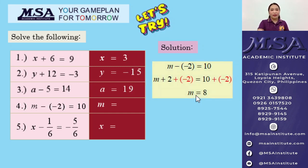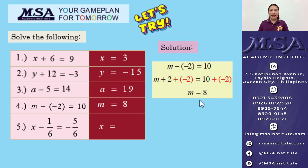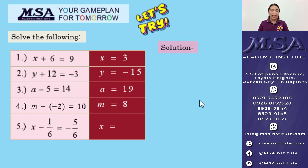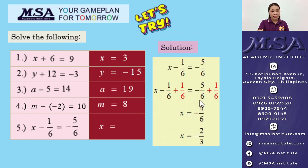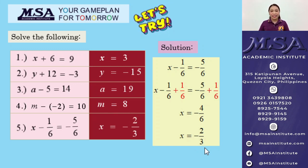For the fourth item: M minus negative 2, which is also equal to M plus 2, is equal to 10. To get rid of positive 2, add negative 2 on both sides and simplify. 10 plus negative 2 gives us 8. So, the final answer is 8. For the fifth item: X minus 1 over 6 is equal to negative 5 over 6. Add positive 1 over 6 on both sides and simplify. Negative 5 over 6 plus 1 over 6 gives us negative 4 over 6, whose lowest term is negative 2 thirds. So, the final answer is negative 2 thirds.